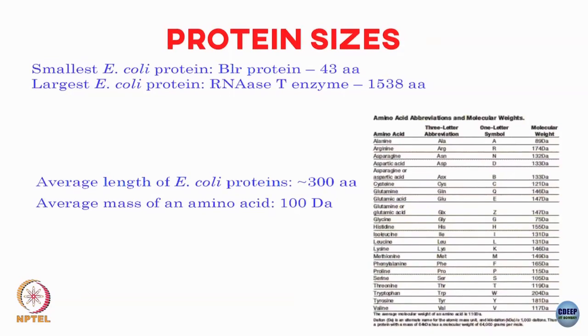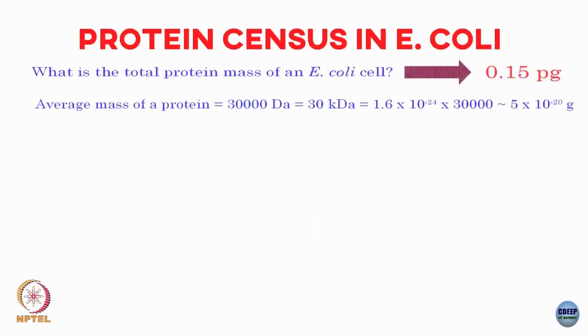The numbers I will use are: average length of an E. coli protein is 300 amino acids, and the average mass of an amino acid is around 100 Daltons.